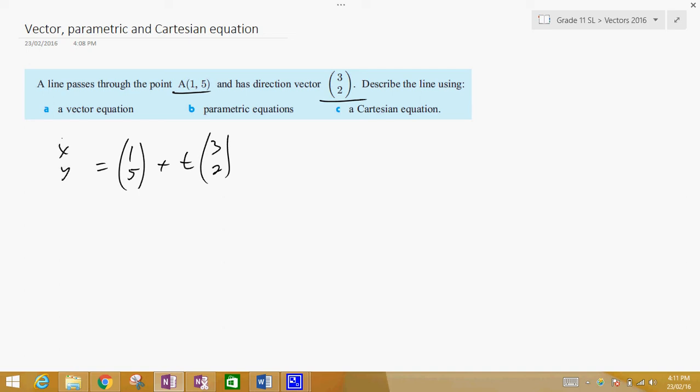So (x, y) is equal to (1, 5) plus t times (3, 2). Well, that's your vector equation. So that's A.